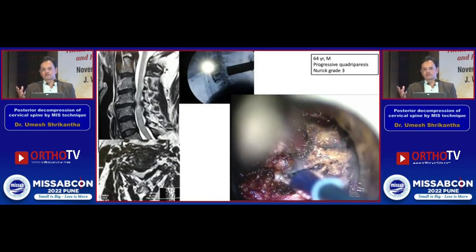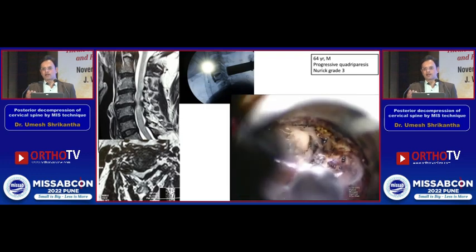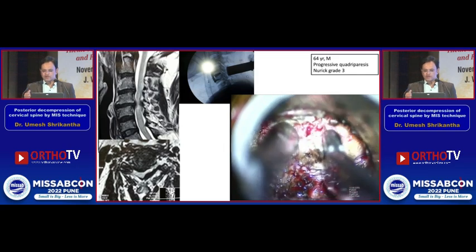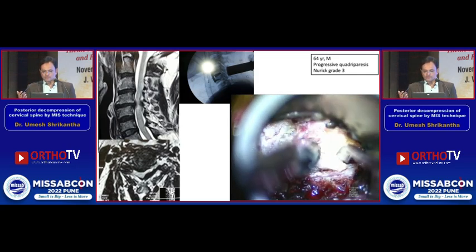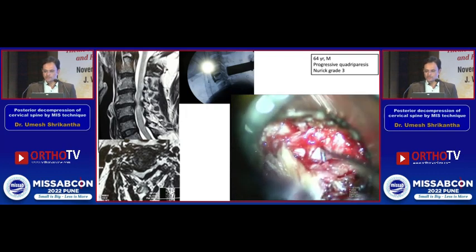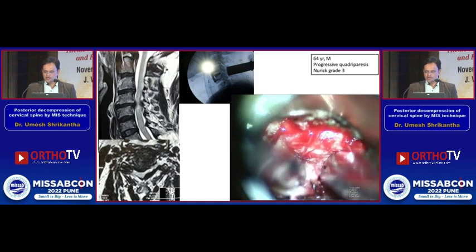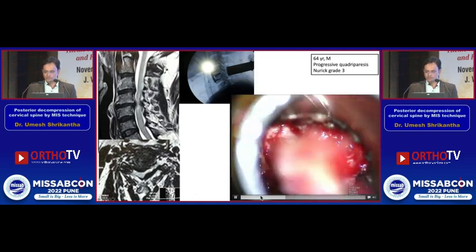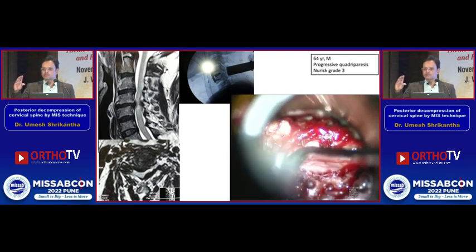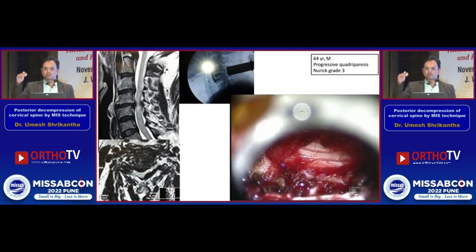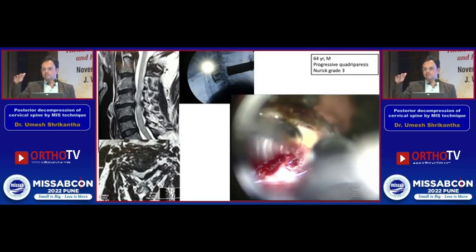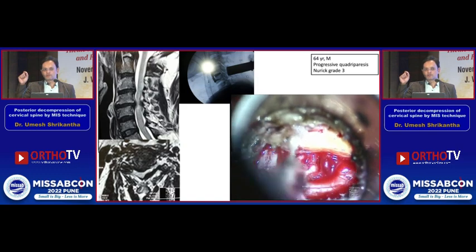We started with simple cases requiring both an anterior and a posterior approach. This is one case where we did an ACDF and also required a posterior decompression because of unilateral compression. This surgical video shows that we decompressed the ipsilateral level — the ligamentum flavum is being removed and ipsilateral cord decompression is done. Just like in the lumbar spine, we tilt the tube to the contralateral side and drill the inner cortex of the contralateral lamina with a 1.7 mm burr.